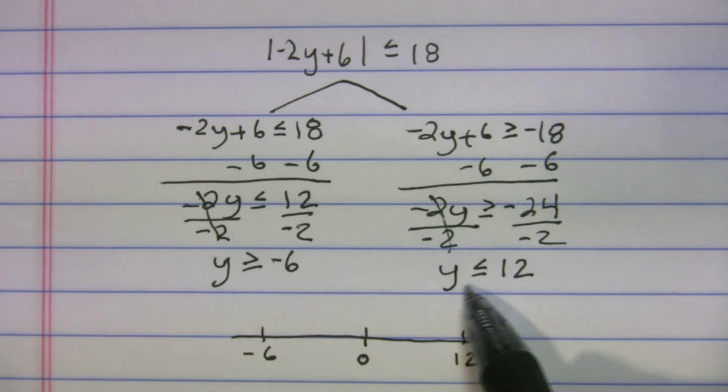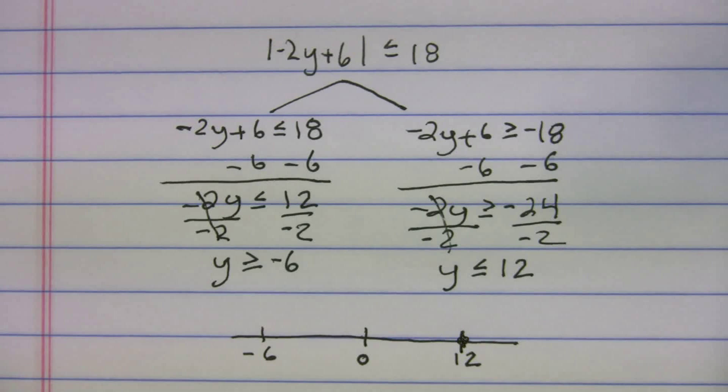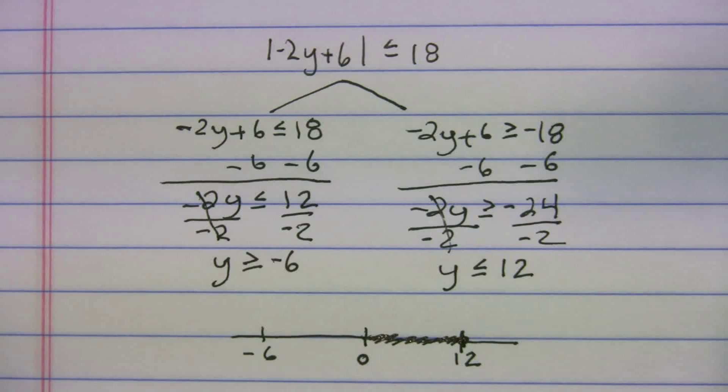It's meant to be less than 12, or less than and equal to. So we can make a filled in dot here since it's going to equal it. And less than, it's going to be to the left. So we'll start filling in to the left.